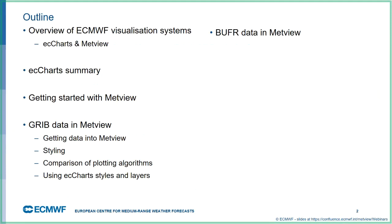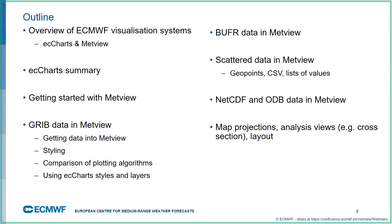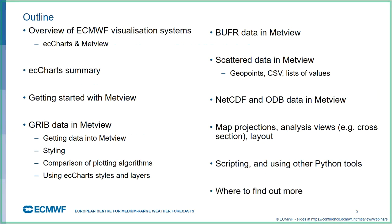Then a quick look at BUFR data for conventional observations, scattered data such as CSV files, data from a Python script that you want to plot, NetCDF data, and ODB data. Then a little bit of time on different map projections and analysis views — cross sections, profiles, and combining all of these into a single layout. And then a few things about scripting tools and how to put our data into other Python tools, plus where to find out more.